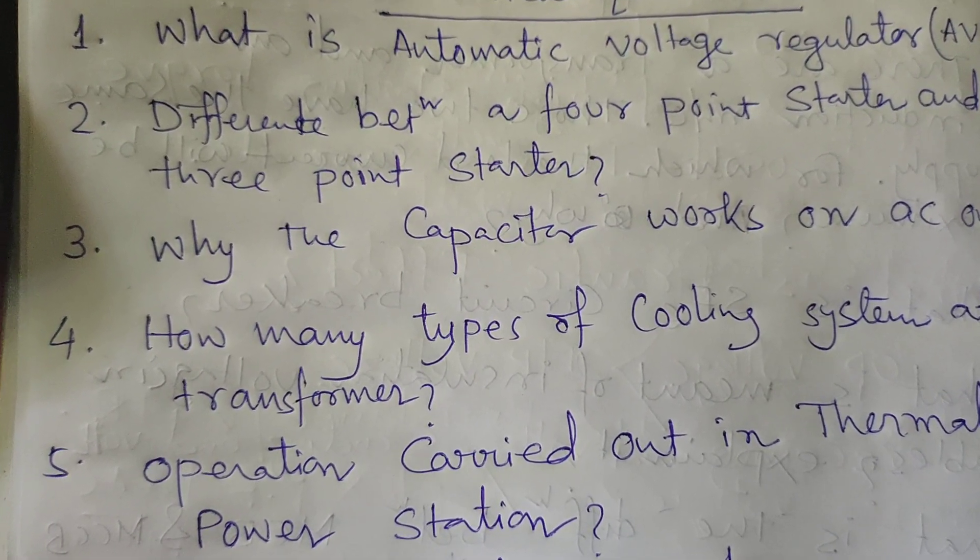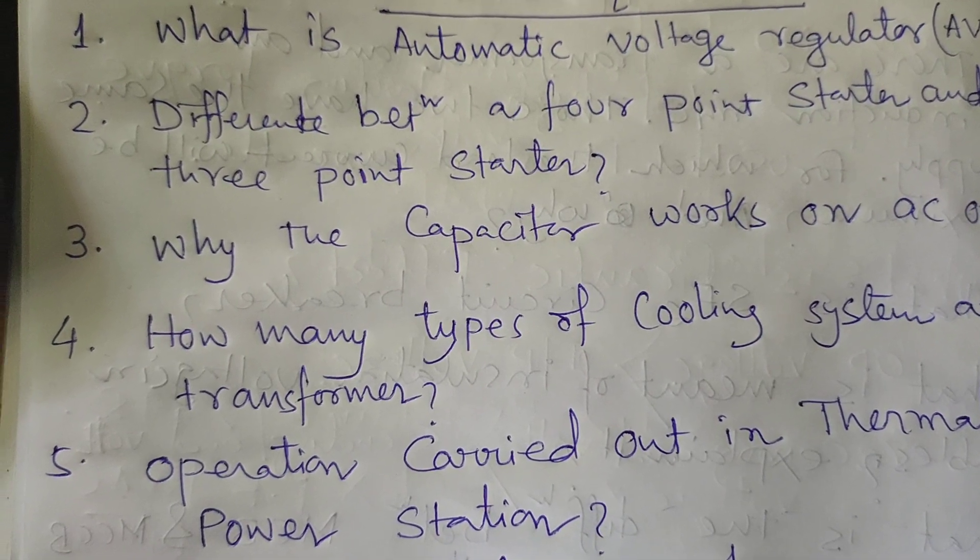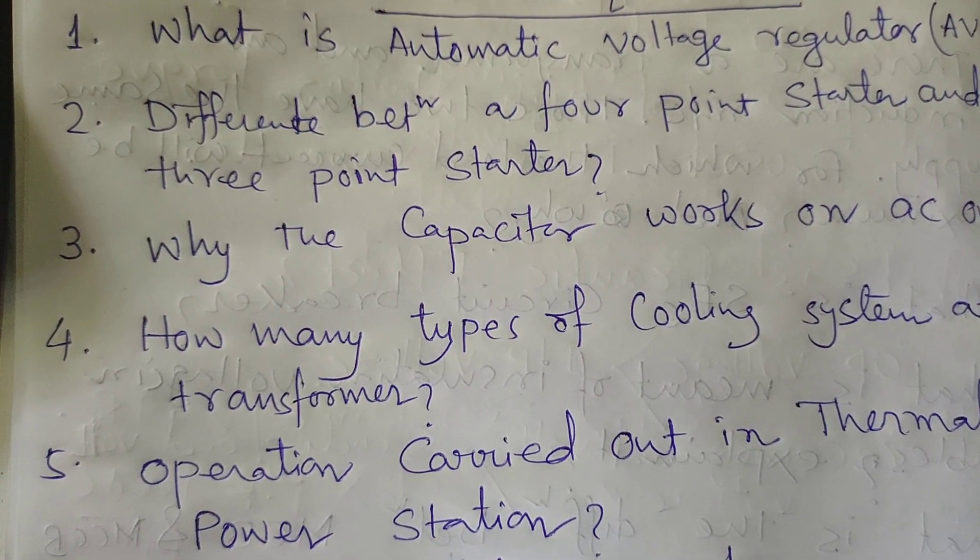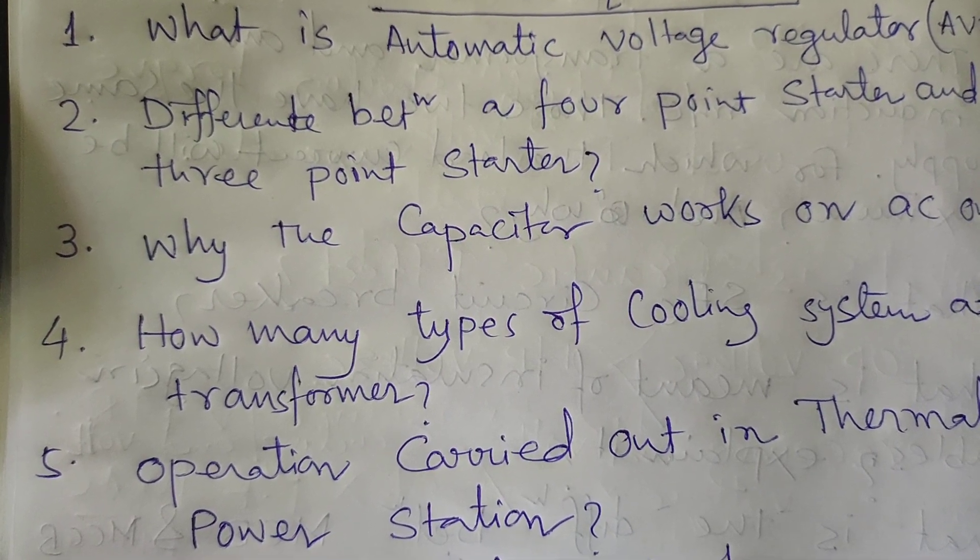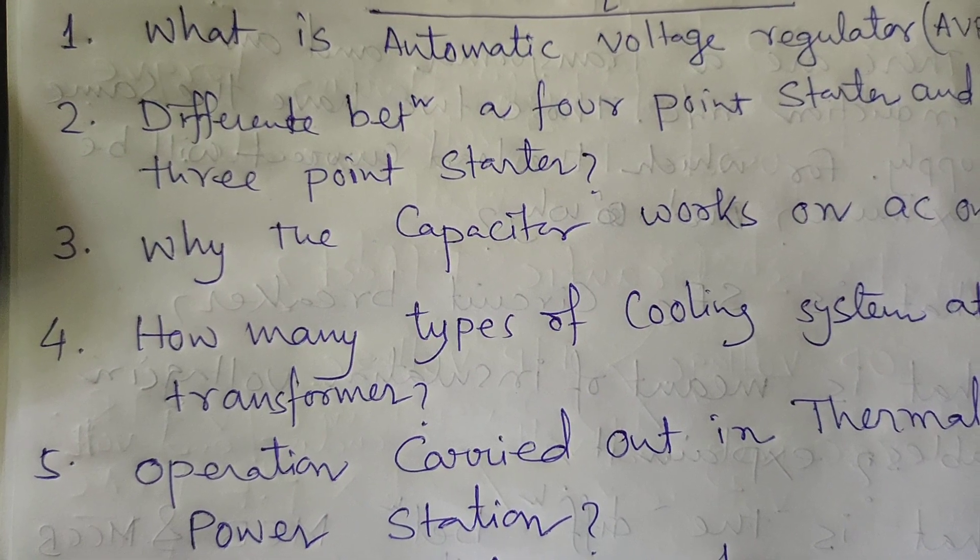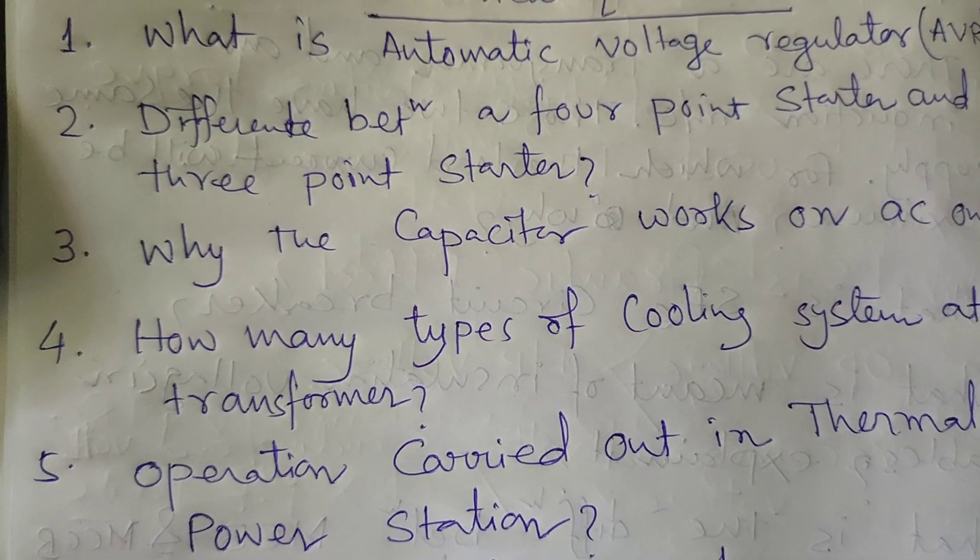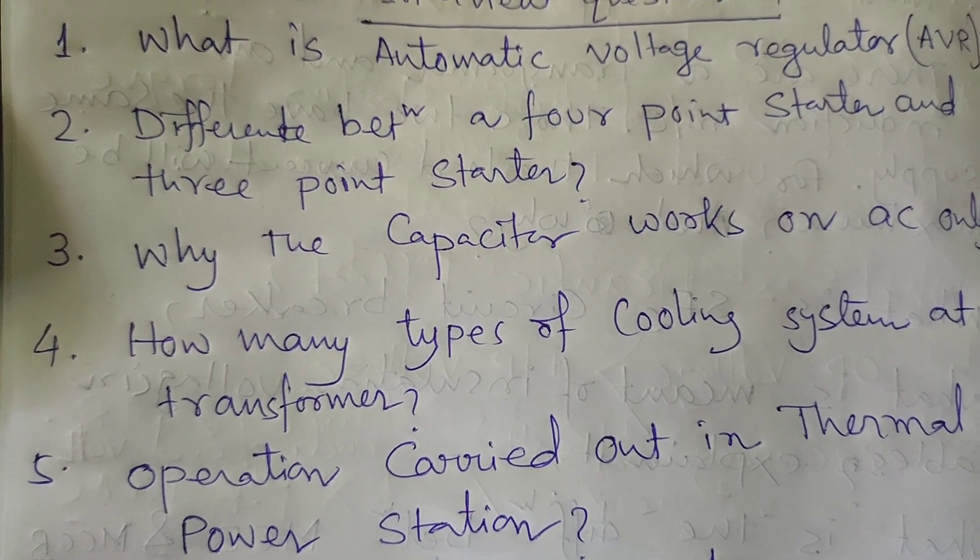First is ONAN, oil natural air natural. Second, ONAF, oil natural air forced. Third is OFAF, oil forced air forced. Fourth is ODWF, oil direct water forced. Fifth is OFAF, oil forced air forced.